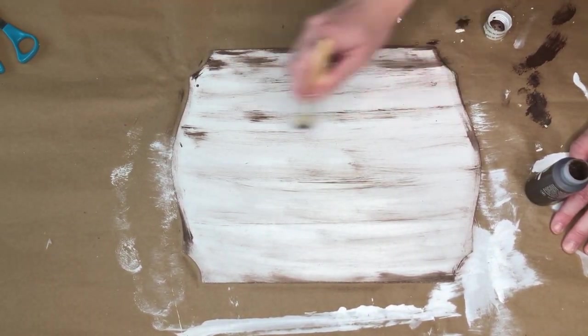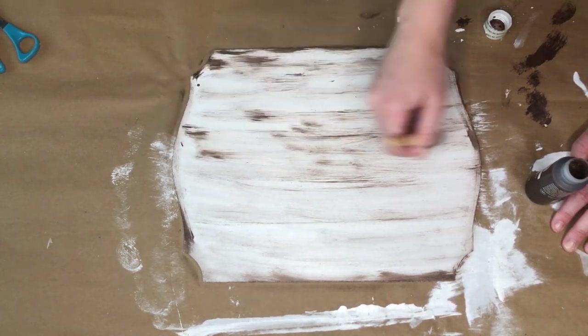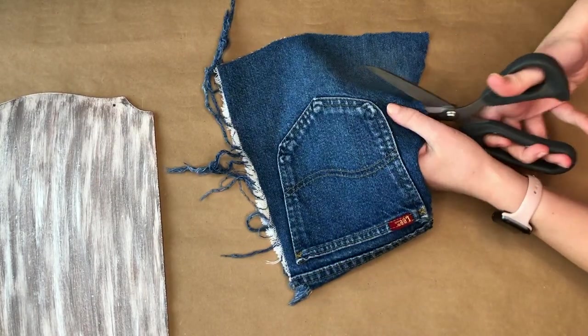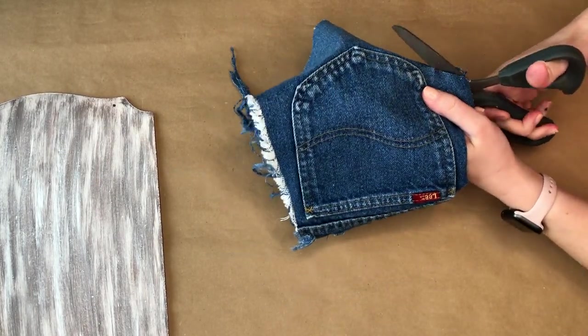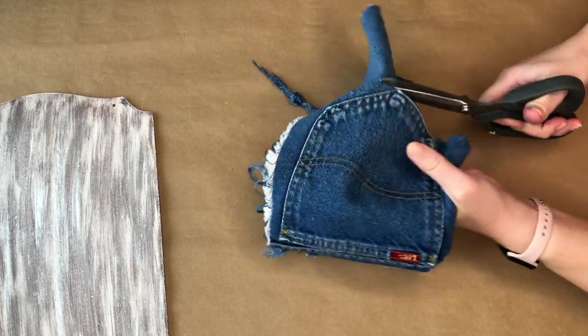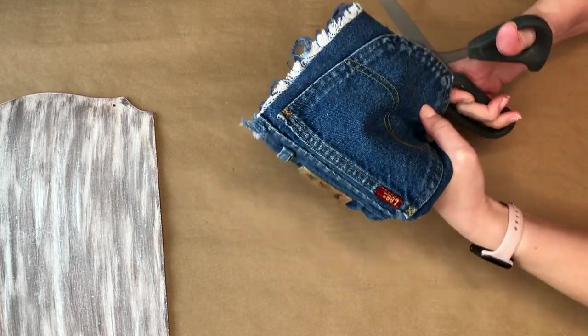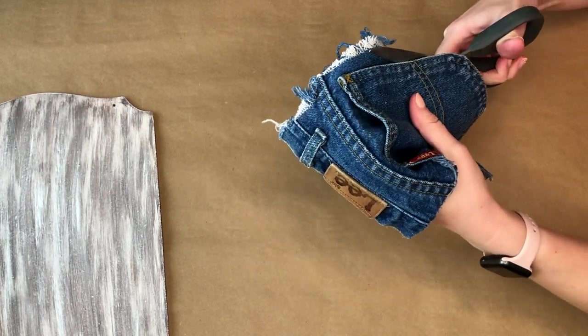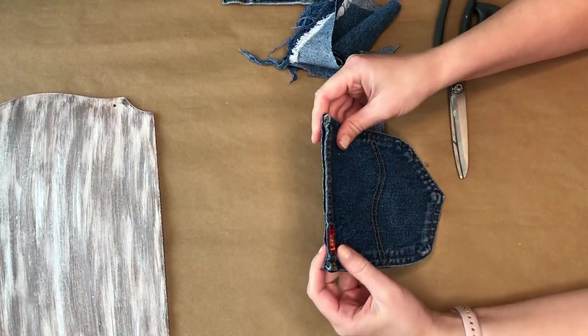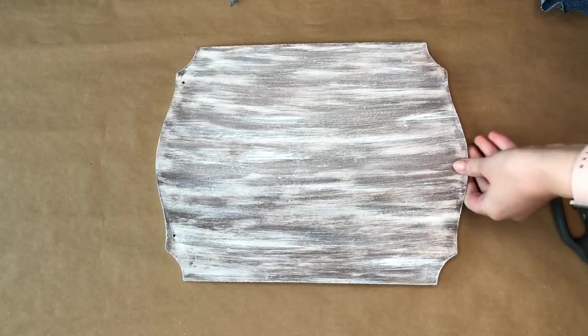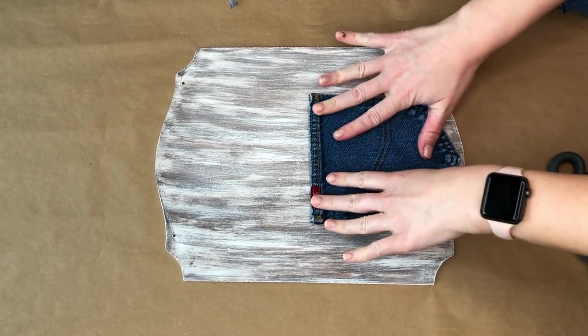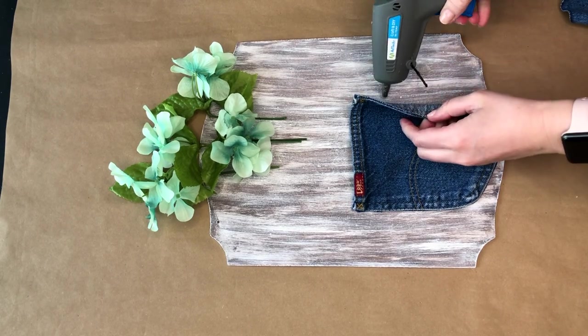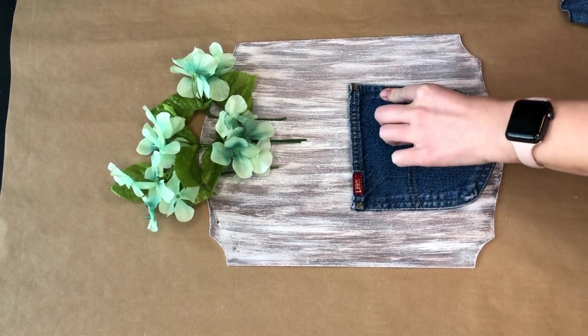Once I had finished painting and left all of that to dry, it was time to move on to the blue jeans section. I'm just taking an old pair of blue jeans, but you could also go to the Goodwill or a thrift store and get them for a couple bucks. I am just cutting all around the pocket. You want to make sure that you don't actually cut the inside portion of the pocket out because that's what we're going to be tucking the flowers into.